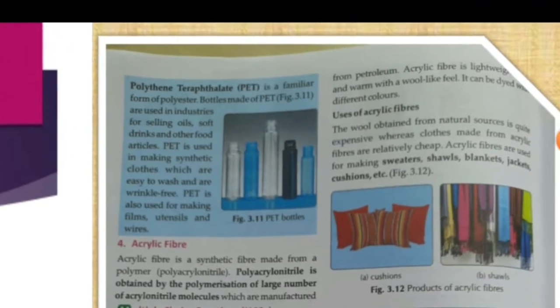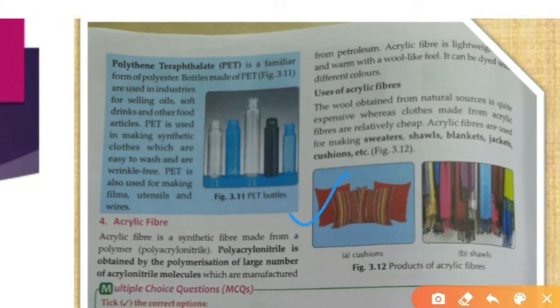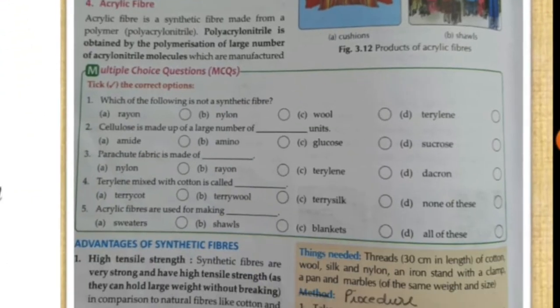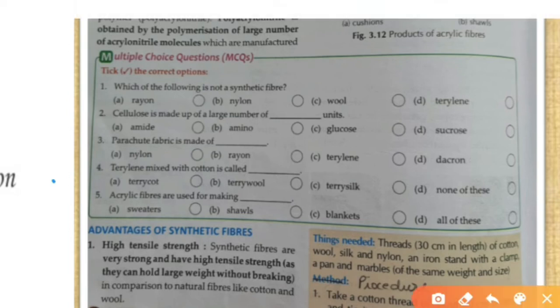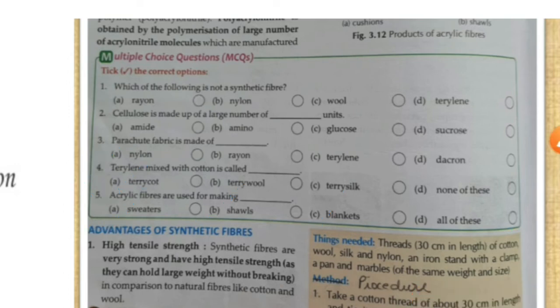Acrylic is used in cushions, shawls, blankets, and jackets — most woolen products can be made from it. Now for MCQs: which of the following is not a synthetic fiber? Cellulose is made from glucose, so it is natural. For parachutes, nylon is used. Terrylene mixed with cotton makes terry cot; terrylene mixed with wool makes terry wool. Acrylic fiber is used in shawls, blankets, and sweaters — answer: all of these.